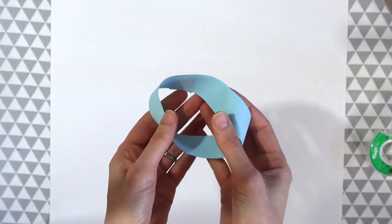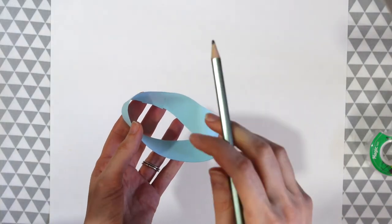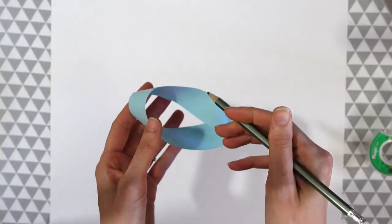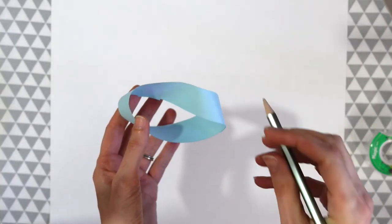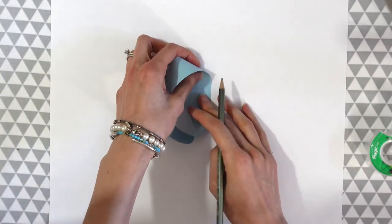And this is our Mobius strip. So it may not look like much but let's see why the shape is cool. So now we're going to take our pencil and we're going to draw a line around the entire thing without lifting our pencil. So we can start anywhere. It doesn't matter.